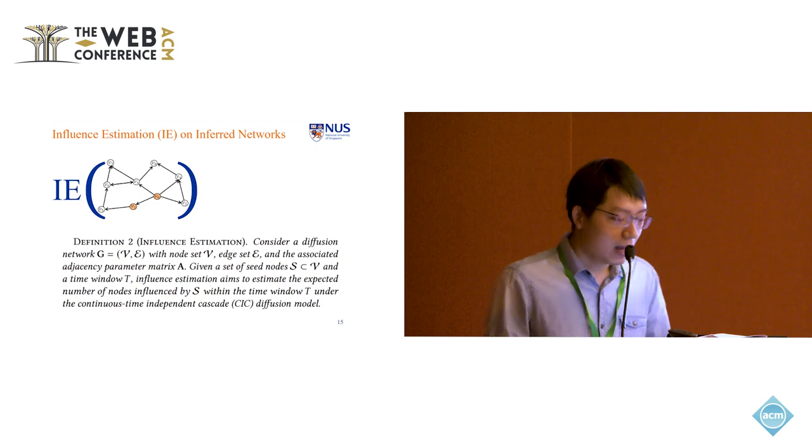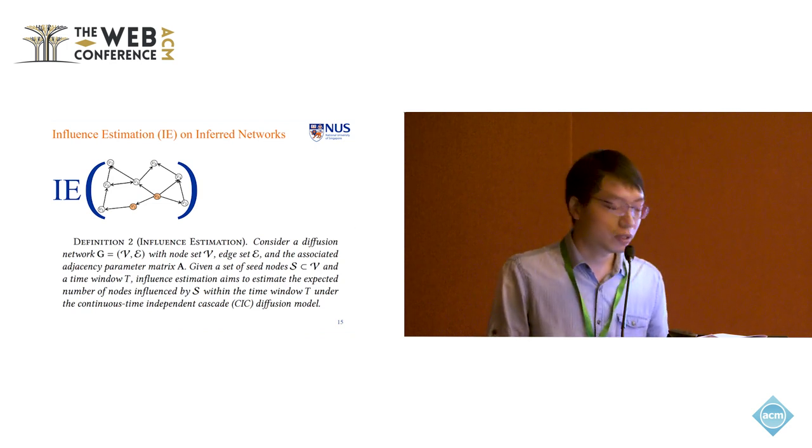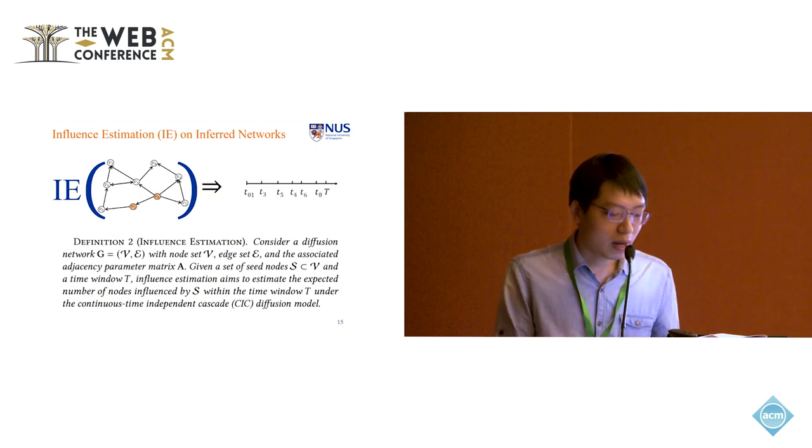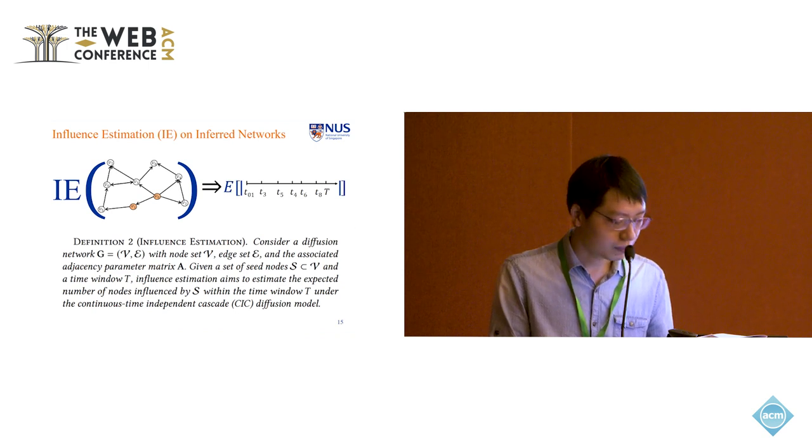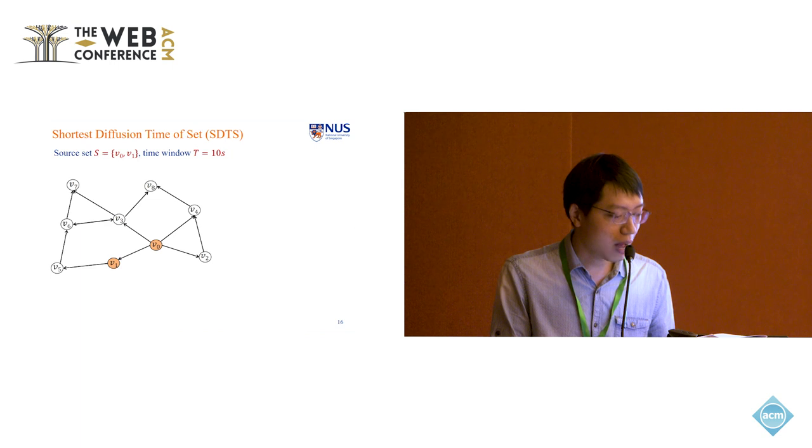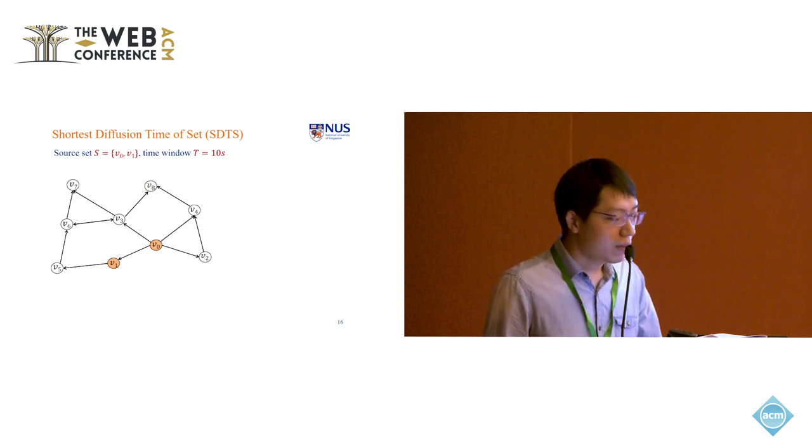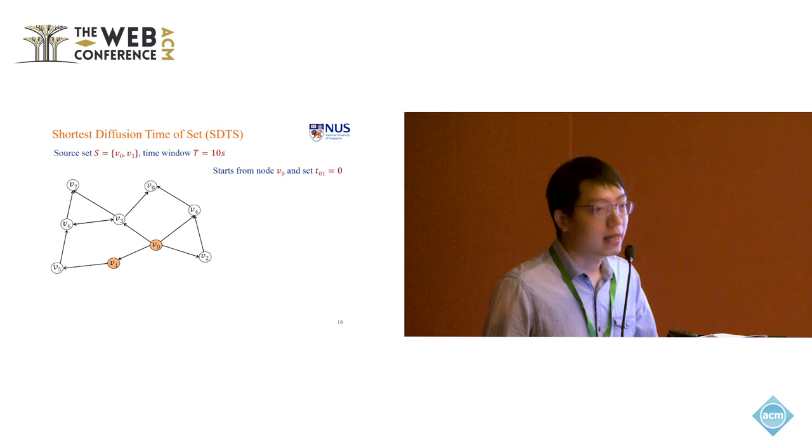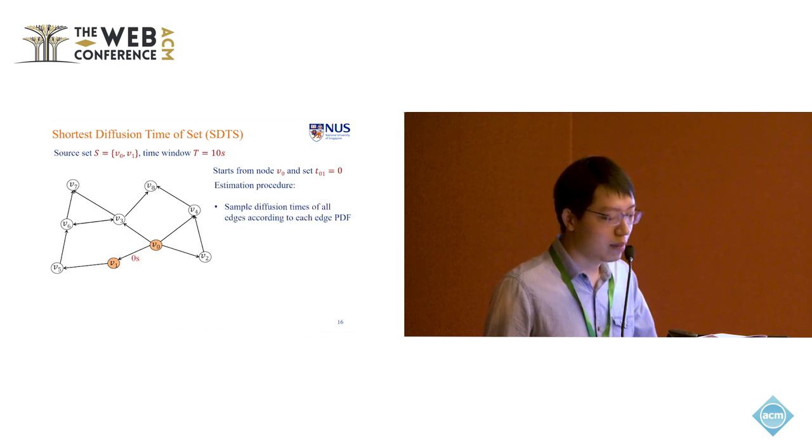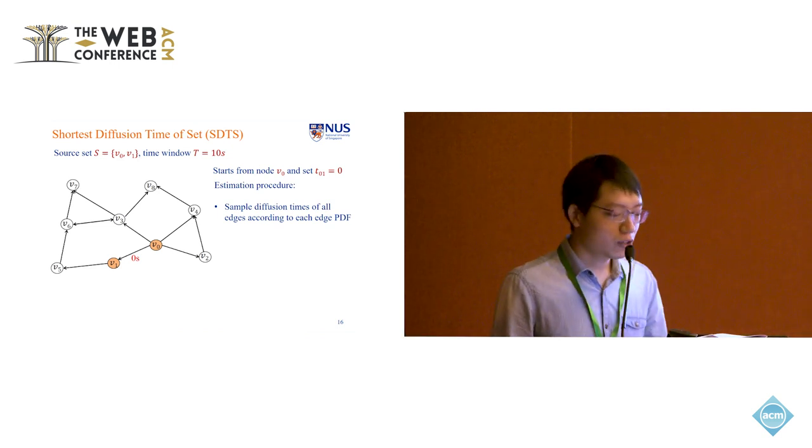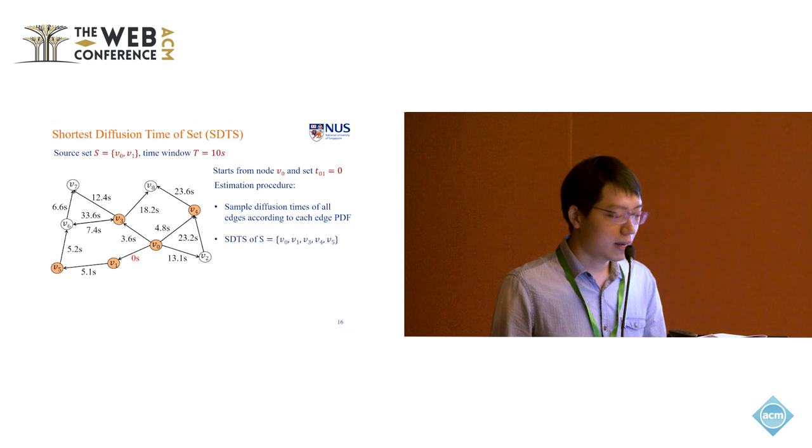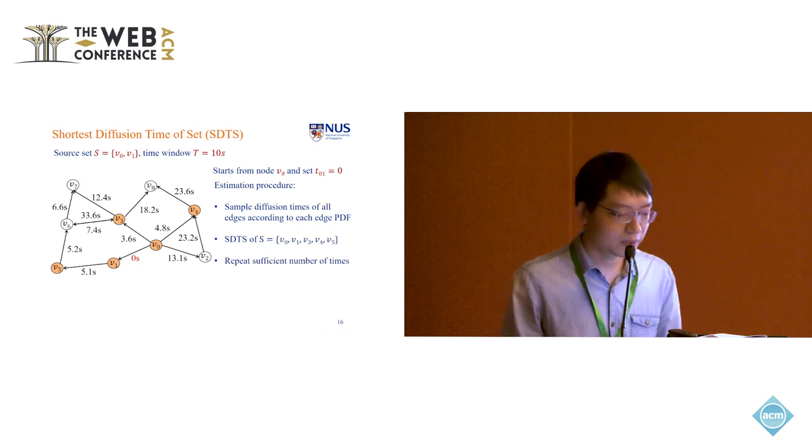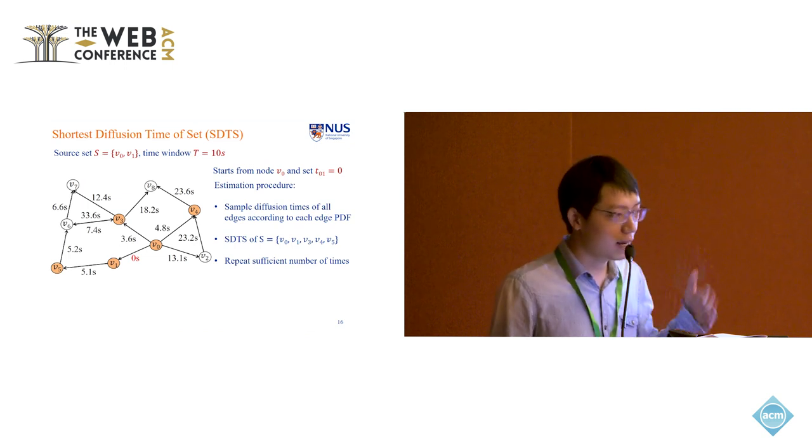And for influence estimation, it's given a bunch of inference networks and the source nodes. It aims to derive the corresponding cascade and calculate the size and the expectation. Here we propose shortest diffusion time set, short for STDS, for the sampling technique. Here give you an example of the source node V0, V1, and time window T. In the first place, we assume the diffusion starts at V0 and set the time between V0 and V1 as 0 seconds. And the estimation procedure would be as follows. First, we sample the diffusion time of each edge based on the edge diffusion function. And then we will calculate the node that is reachable from node zero within 10 seconds. That would be the set of STDS. And we will repeat this process sufficient times until we get accurate estimation.